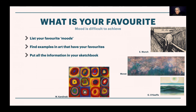Monet, if he wanted to, if he used bright red, bright green, bright yellow, he'd create a whole different mood using the same technique. Now find examples in art of your favorites. Put them in your sketchbook and start collecting. We'll see you in the next section.